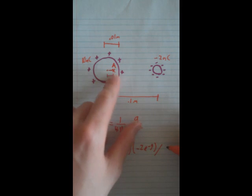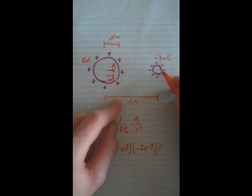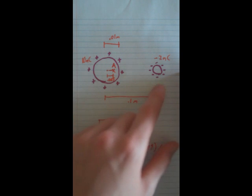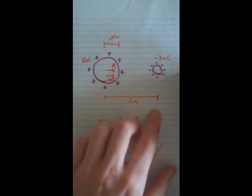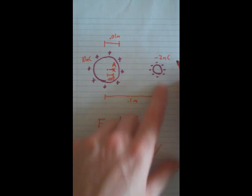the distance from here to here, which is going to be this distance right here, because when it's a sphere, you treat it as a point charge from the very center of it.